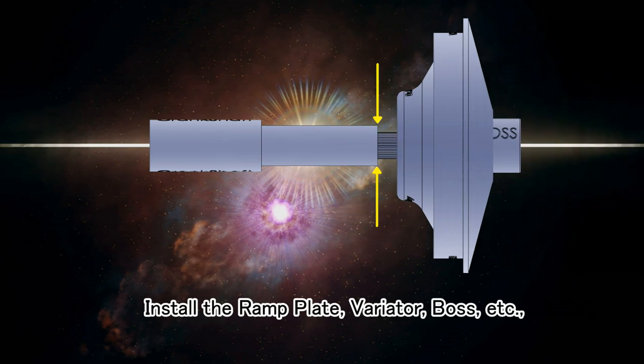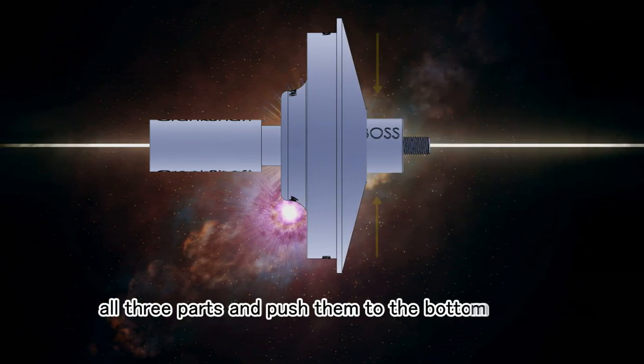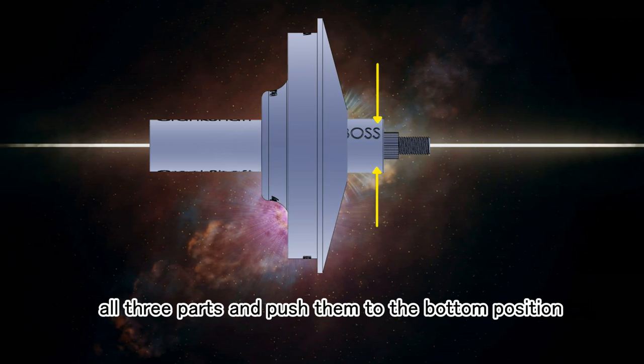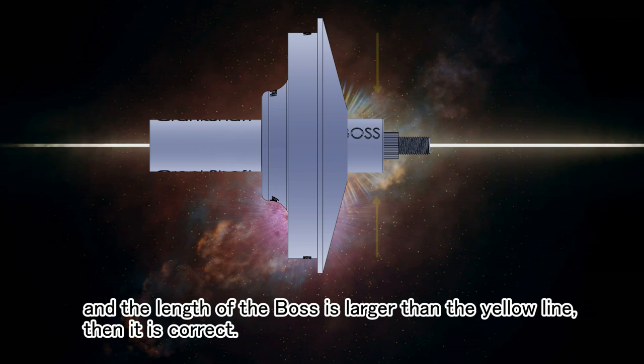Install the ramp plate, variator, boss, etc. All three parts and push them to the bottom position. And the length of the boss is larger than the yellow line, then it is correct.